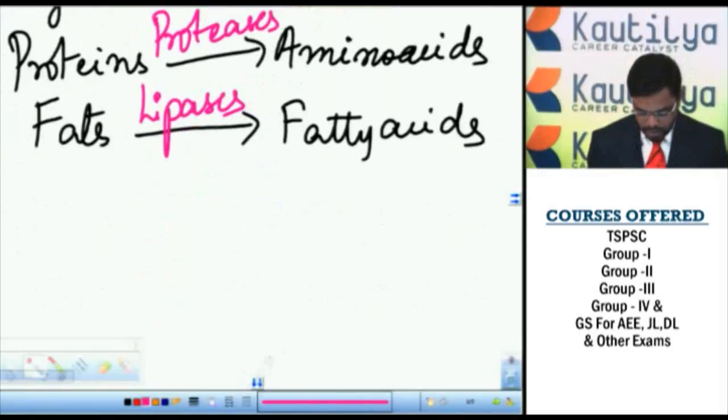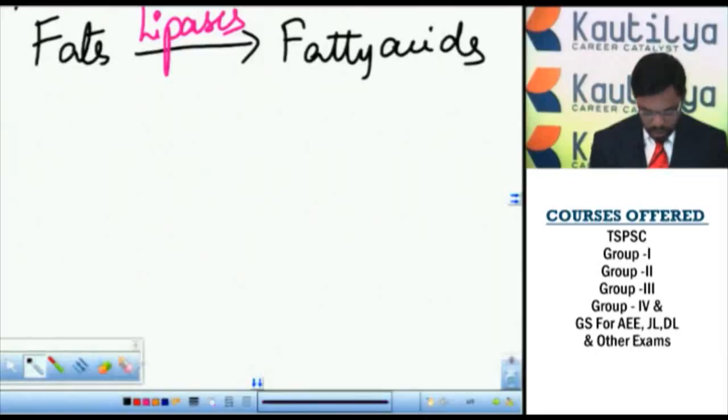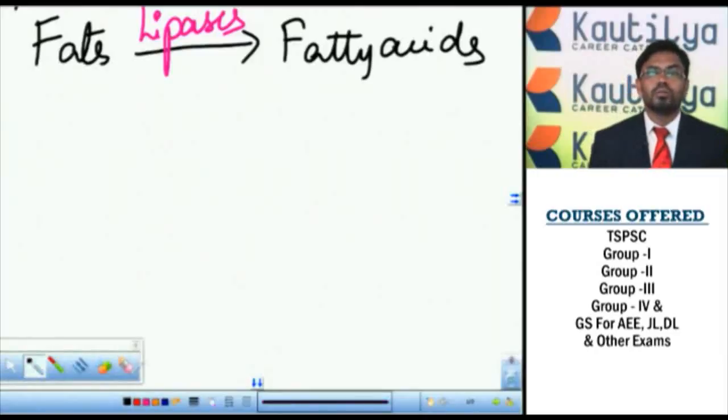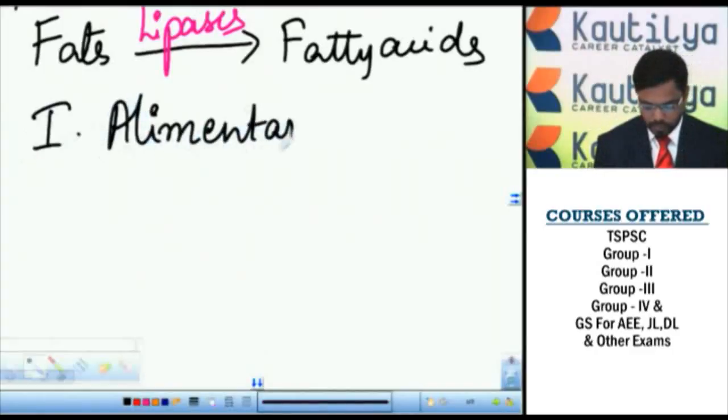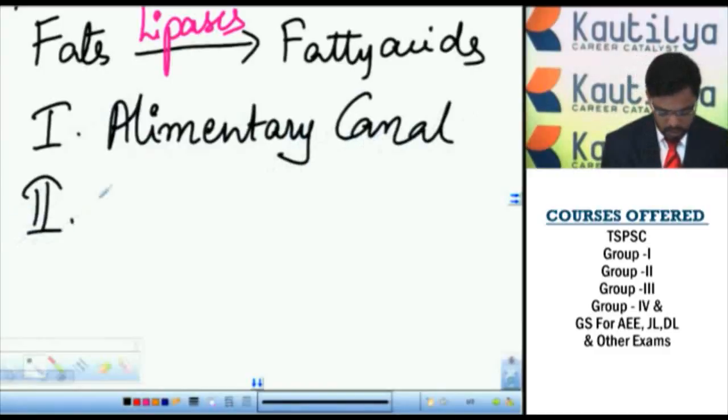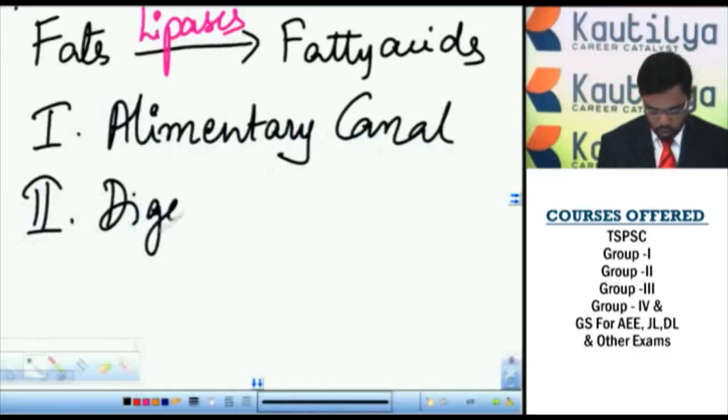The anatomy of this digestive system can be mainly studied under two headings. They are alimentary canal and digestive glands.